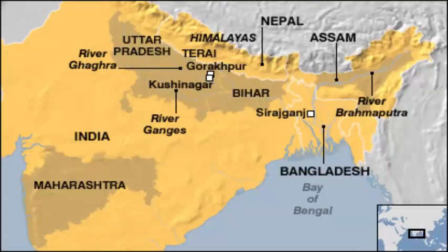The Tarai is found in the regions of Himachal Pradesh, Haryana, Uttarakhand, Uttar Pradesh and Bihar. It is also found in eastern regions such as West Bengal, Bangladesh, Bhutan and Assam, where it is largely due to the Brahmaputra river.